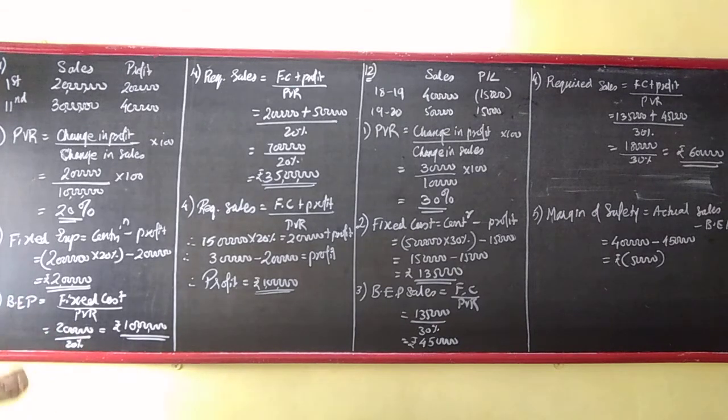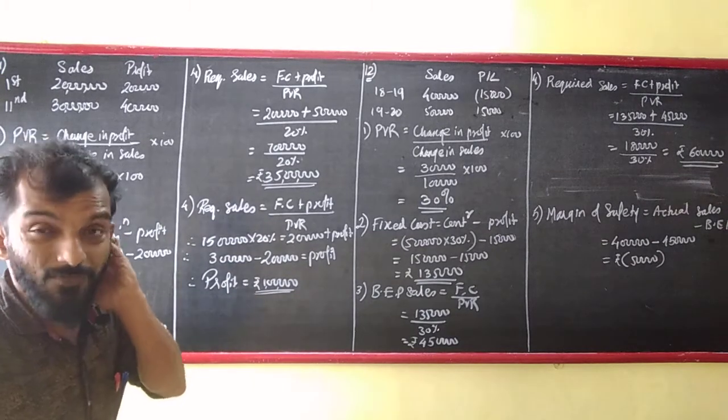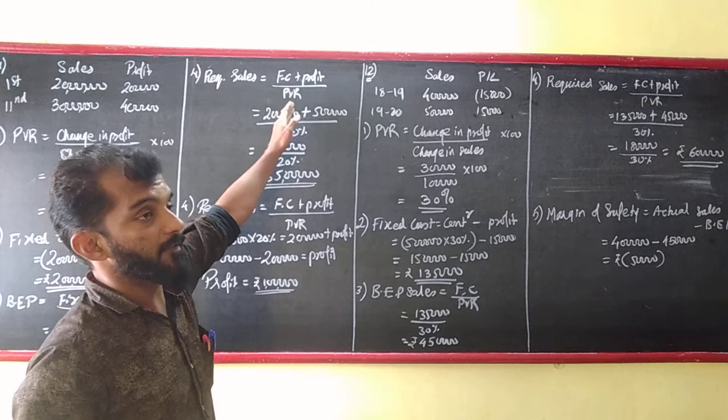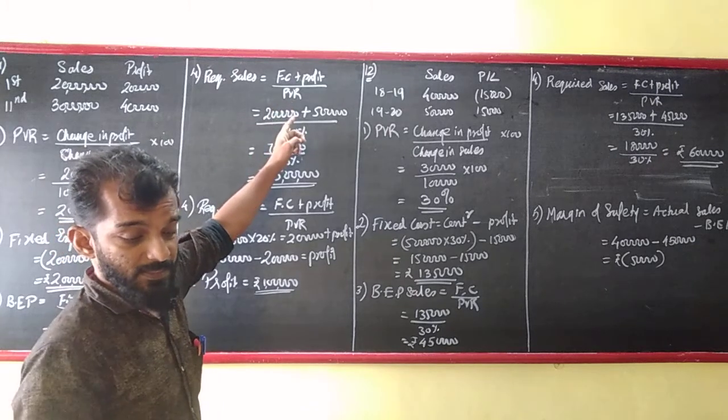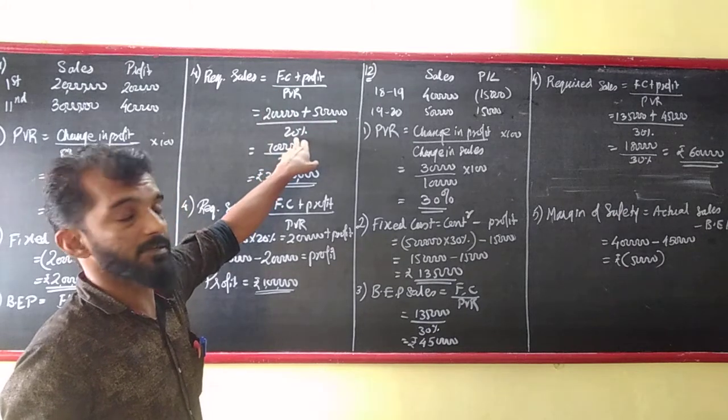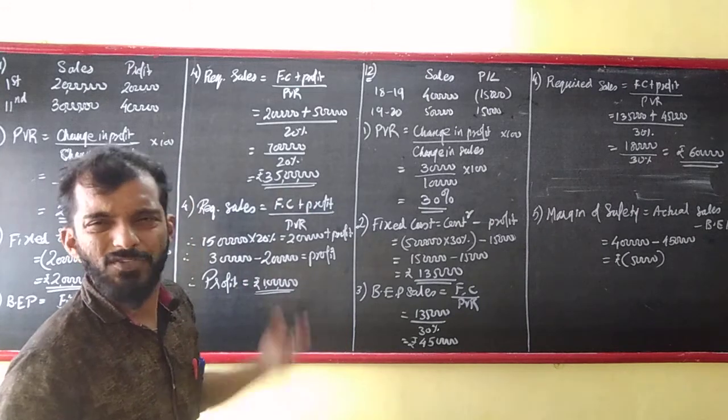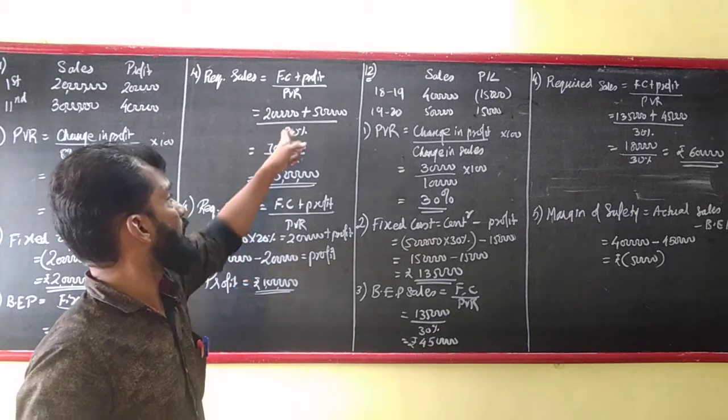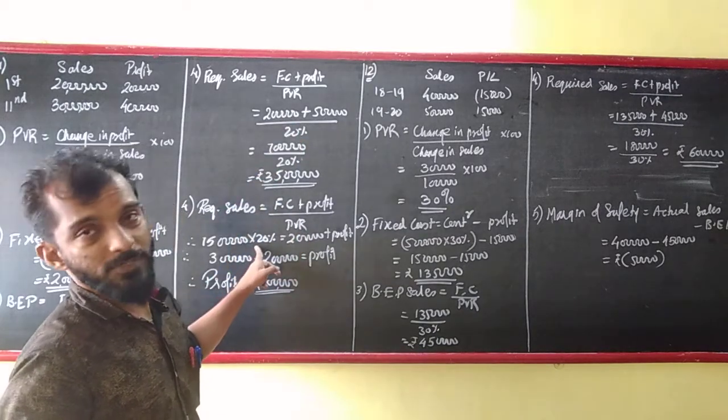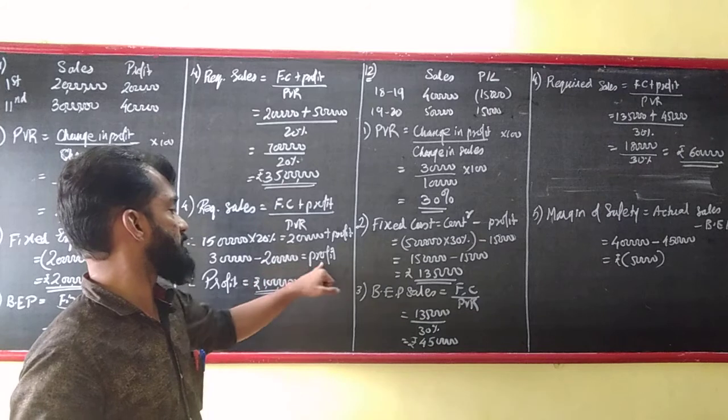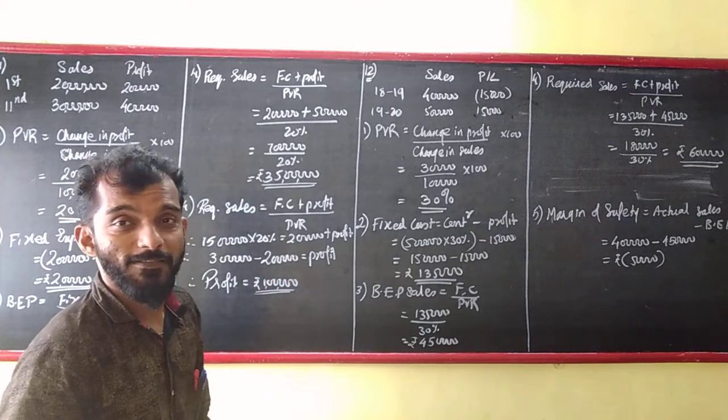Third thing, they have asked about BEP. BEP is equal to fixed cost upon PVR. Fixed cost I am having, PVR also I am having. Required sales to earn a profit of rupees 5 lakhs, no problem. Required sales is equal to fixed cost plus profit upon PVR. Fixed cost is 2 lakhs as we have calculated, profit is 5 lakhs. Simple.